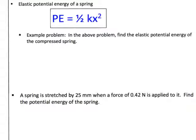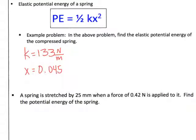Now that we're familiar with the spring constant, we can find elastic potential energy. The formula is PE = one-half times k times x squared, where k tells you the stiffness and x is the amount the spring stretches or compresses. Using our previous problem — k = 133 N/m and x = 0.045 m — plug those into the formula and try it out.